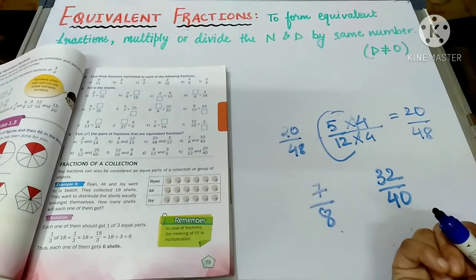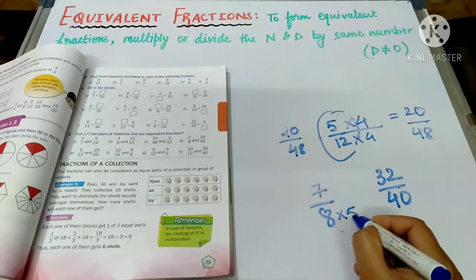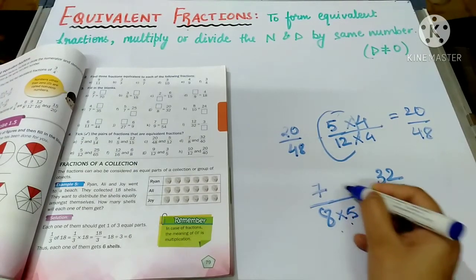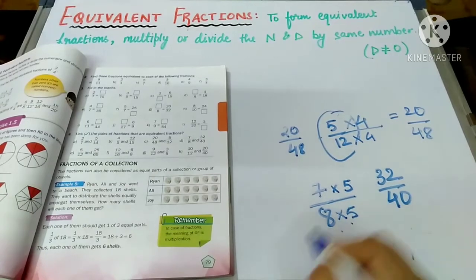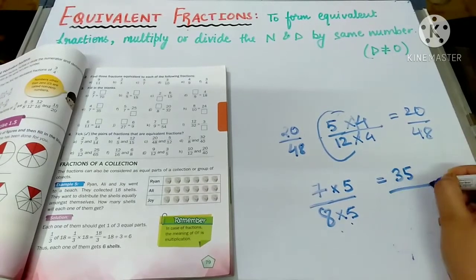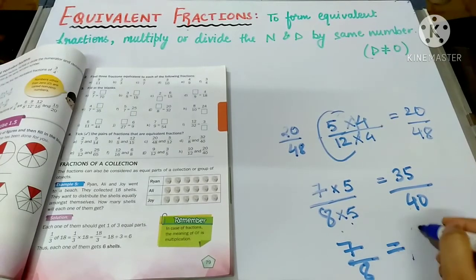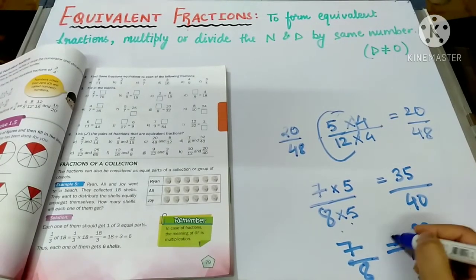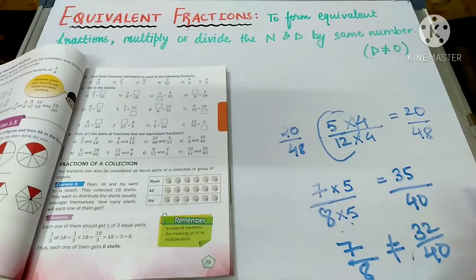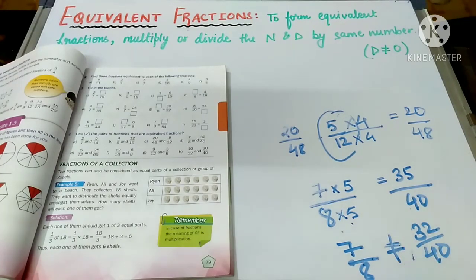Now for seven upon eight and thirty-two upon forty: forty comes in the table of eight — eight fives are forty. If we are multiplying the denominator by five, then the numerator should also be multiplied by five. Seven fives are thirty-five, not thirty-two. So the fractions seven upon eight and thirty-two upon forty are not equal. That is the sign of not equal.